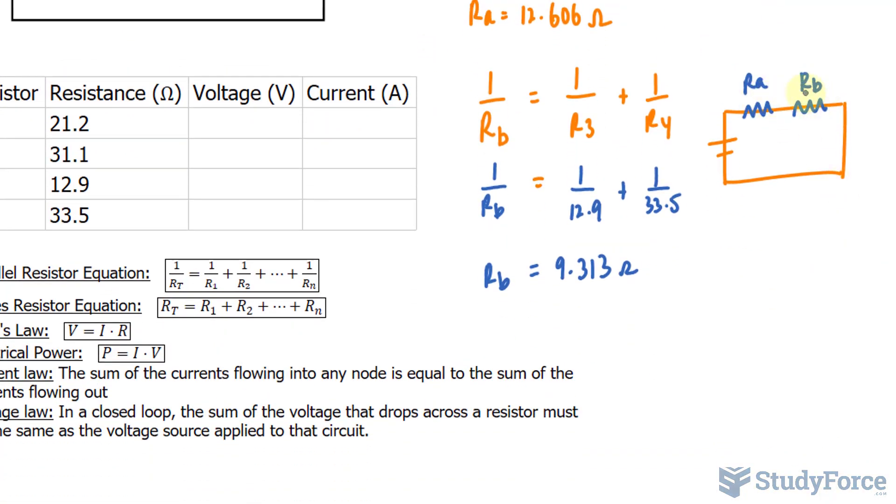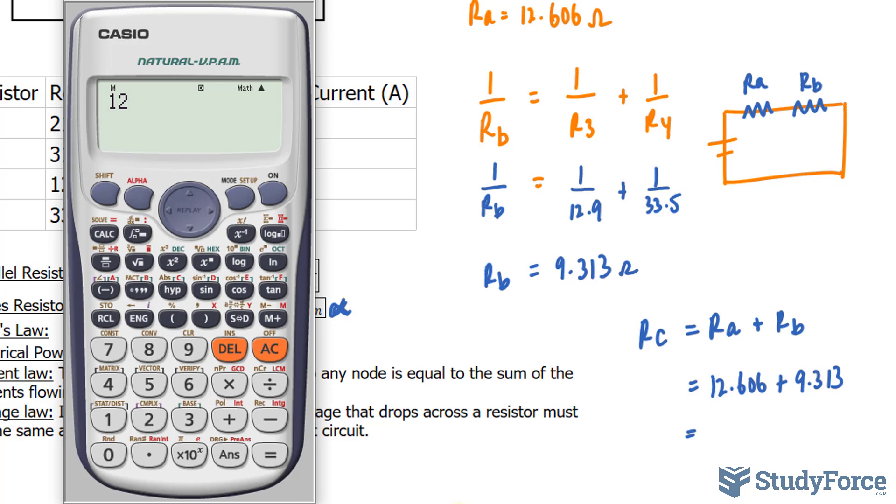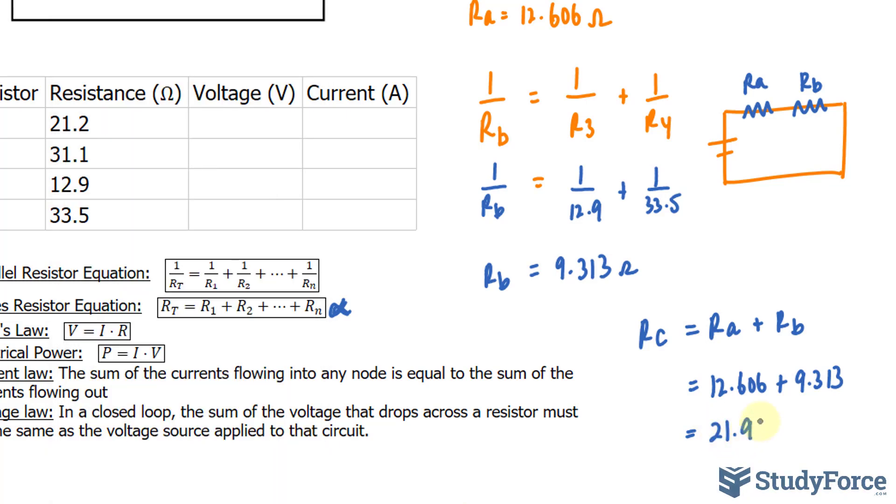So notice that RA and RB are in series. They're not in parallel anymore. We'll be using this formula to help us find their total. And the formula is easy. You just add RA and RB together. The combined version will be called RC, and that consists of RA plus RB. So I'll take 12.606 and add it to 9.313. Here's what we get. So 12.606 plus 9.313, and that makes 21.919. 21.919 ohms is RC.